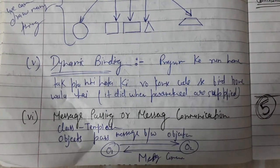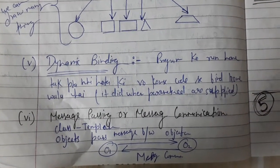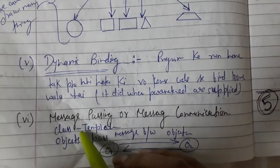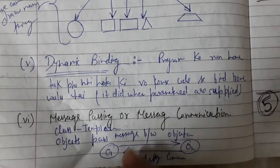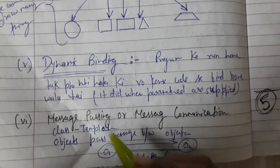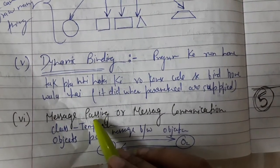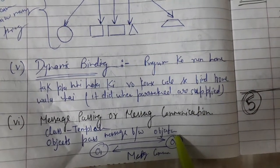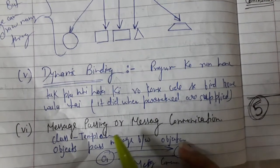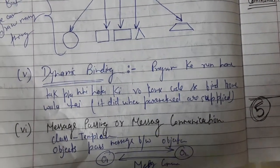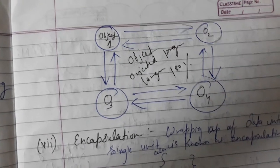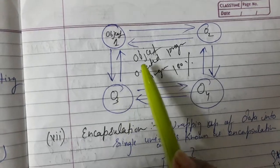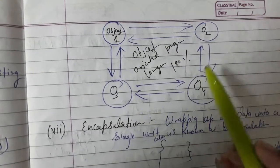Now we have message passing and message communication, which is between classes and objects. When we want to access any methods in a class, first we have to create that class, and after that we will call that object through that function or through any variable. This is called message passing and message communication in object-oriented language.